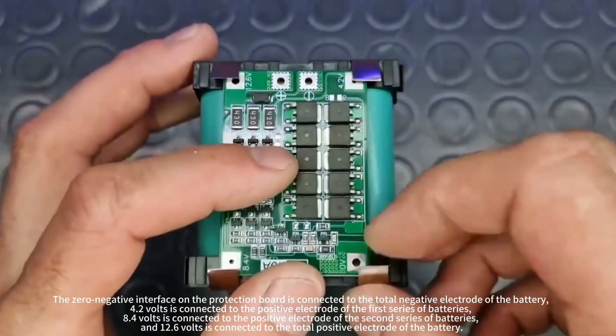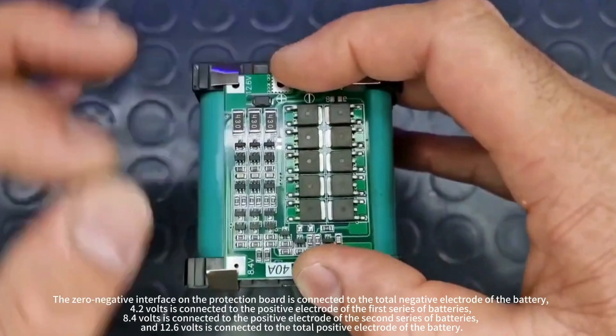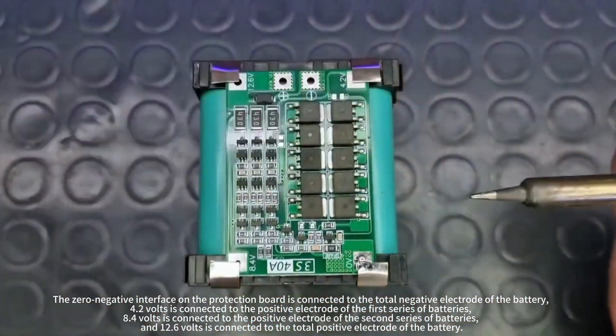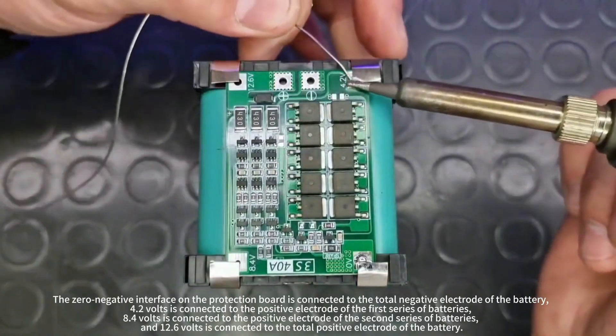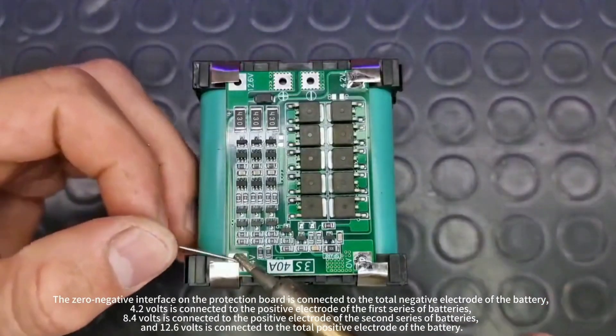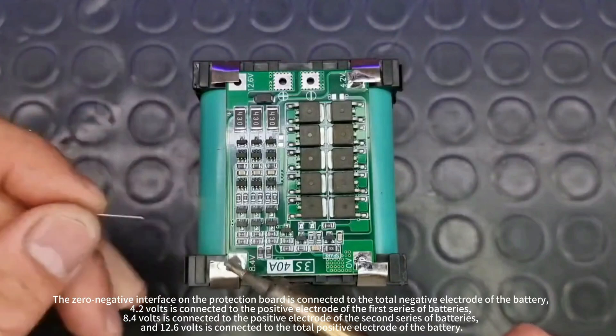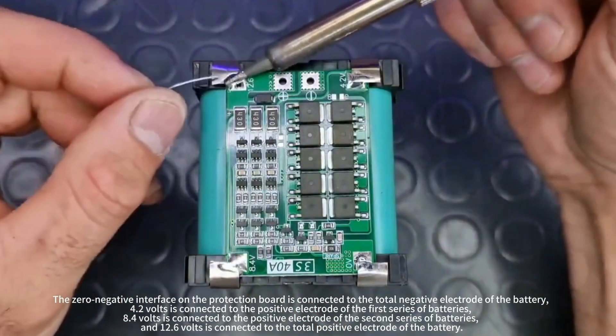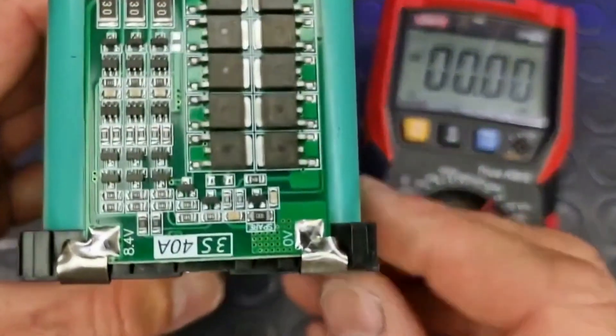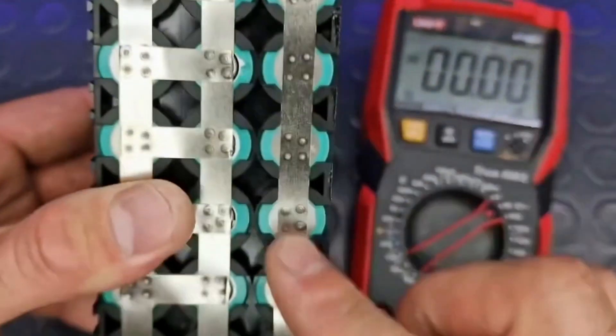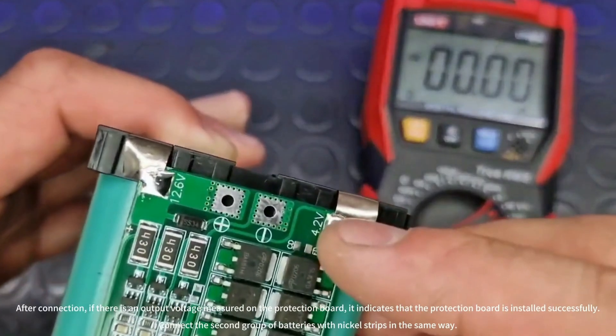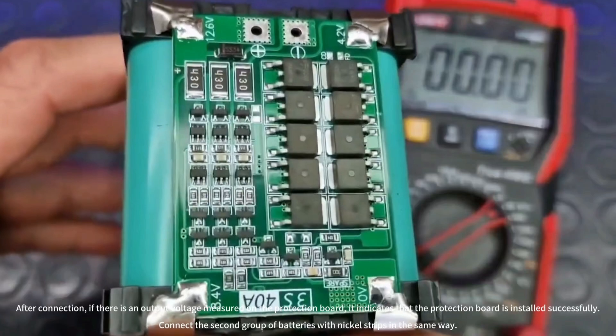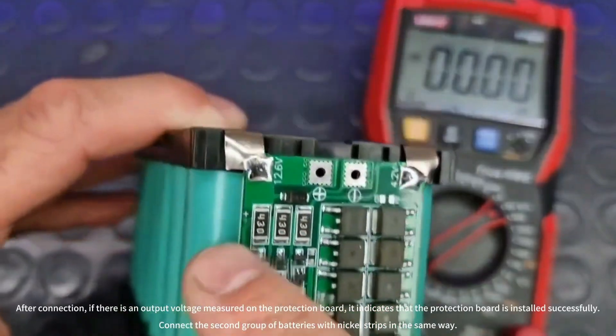The zero negative interface on the protection board is connected to the total negative electrode of the battery. 8.4V is connected to the positive electrode of the second series of batteries, and 12.6V is connected to the total positive electrode of the battery. After connection, if there is an output voltage measured on the protection board, it indicates that the protection board is installed successfully.